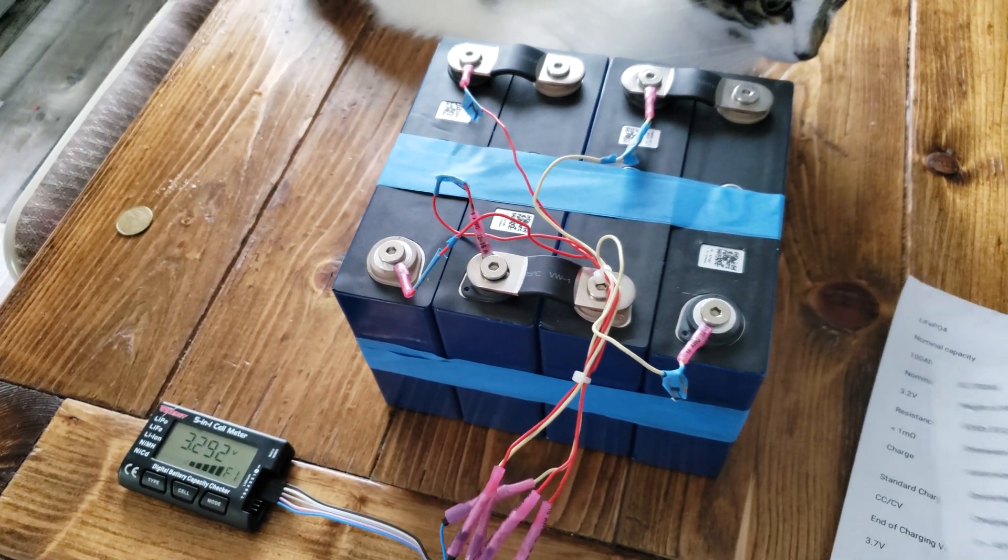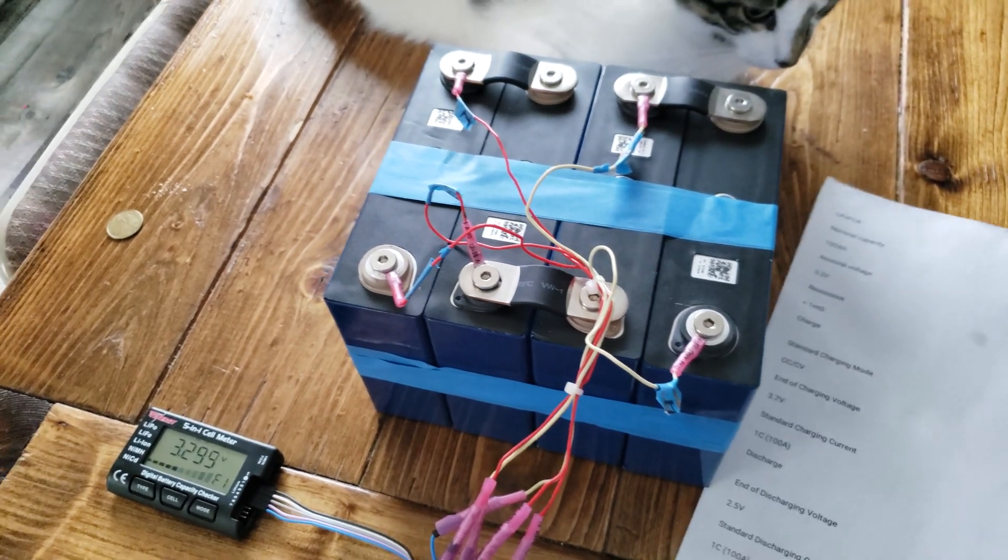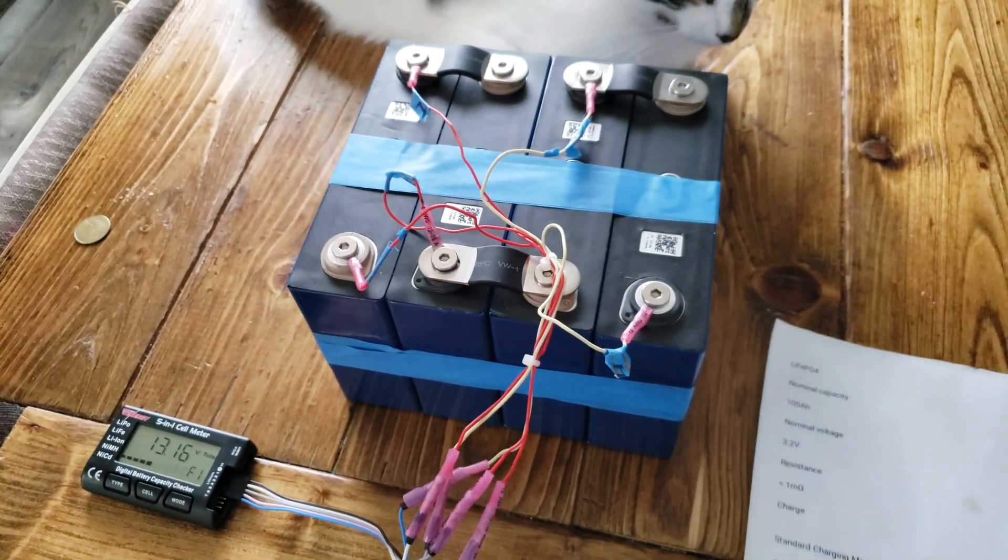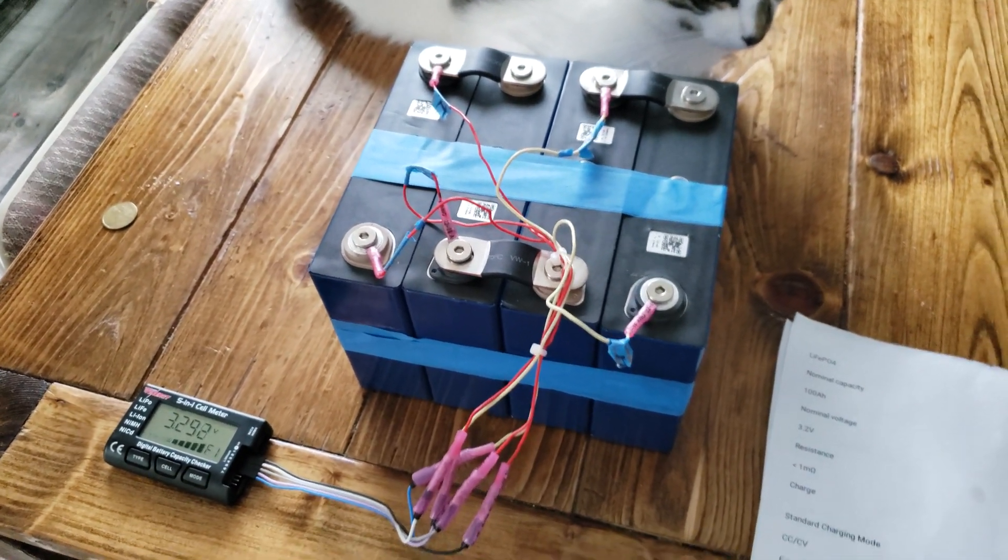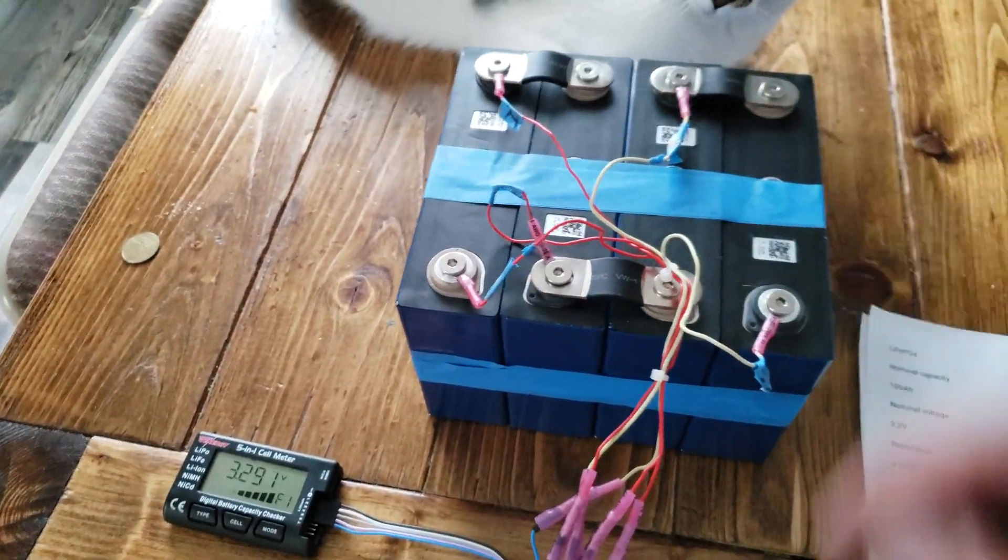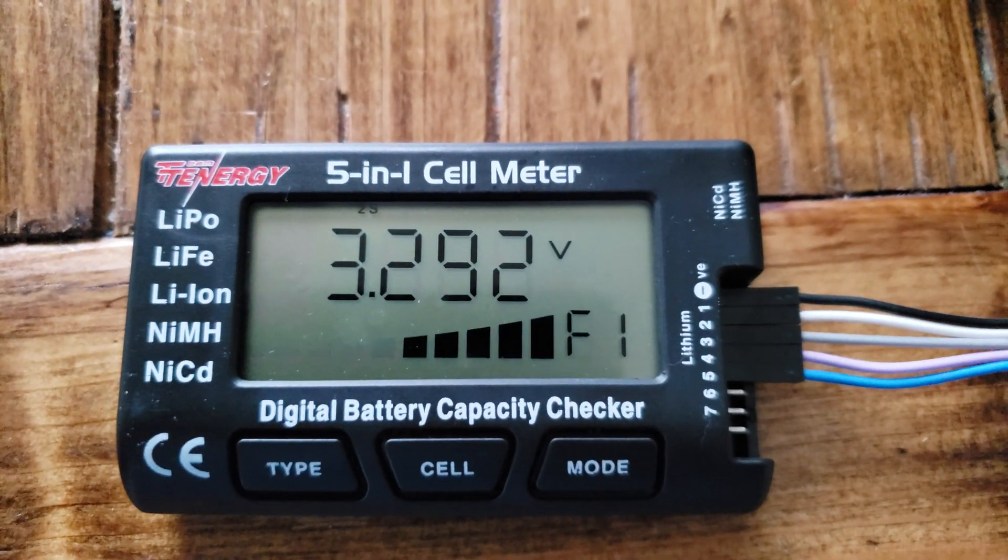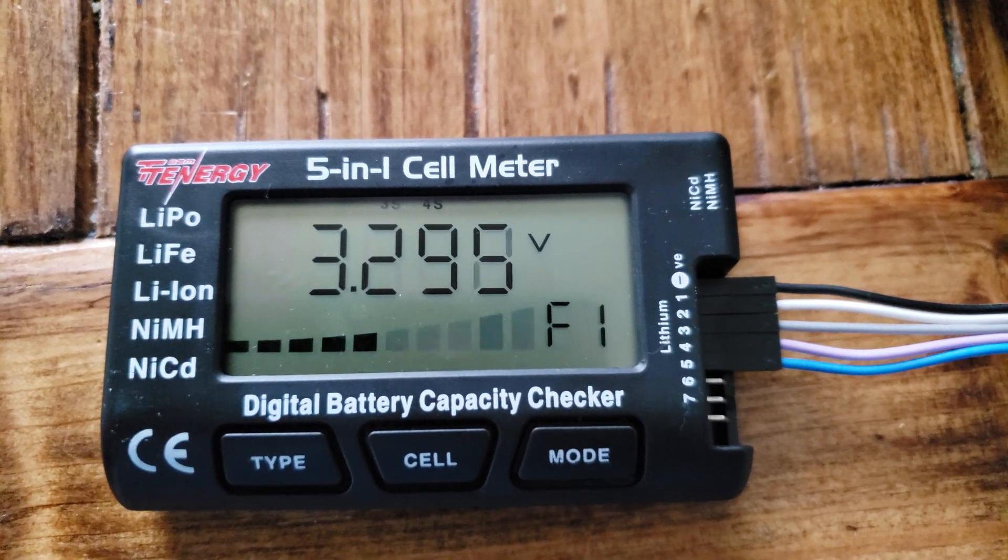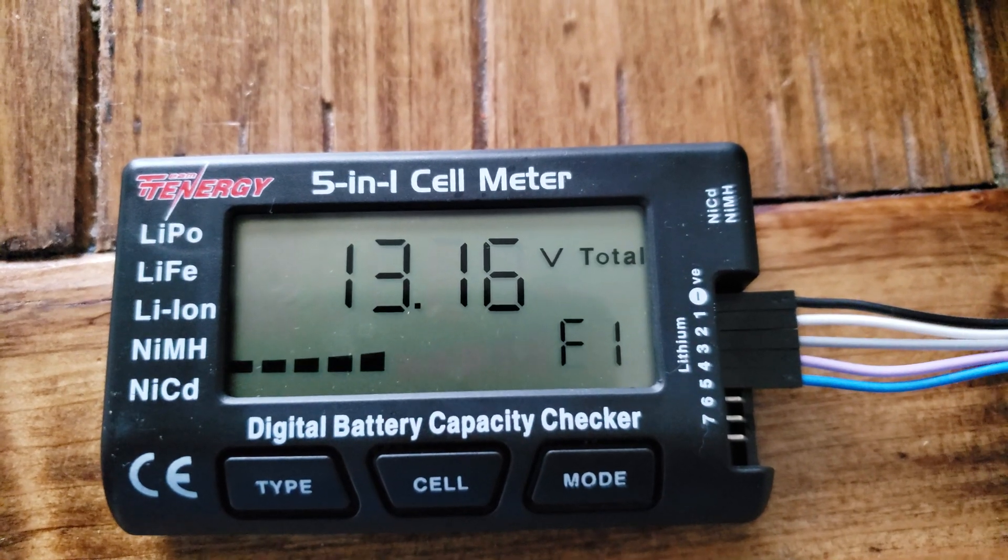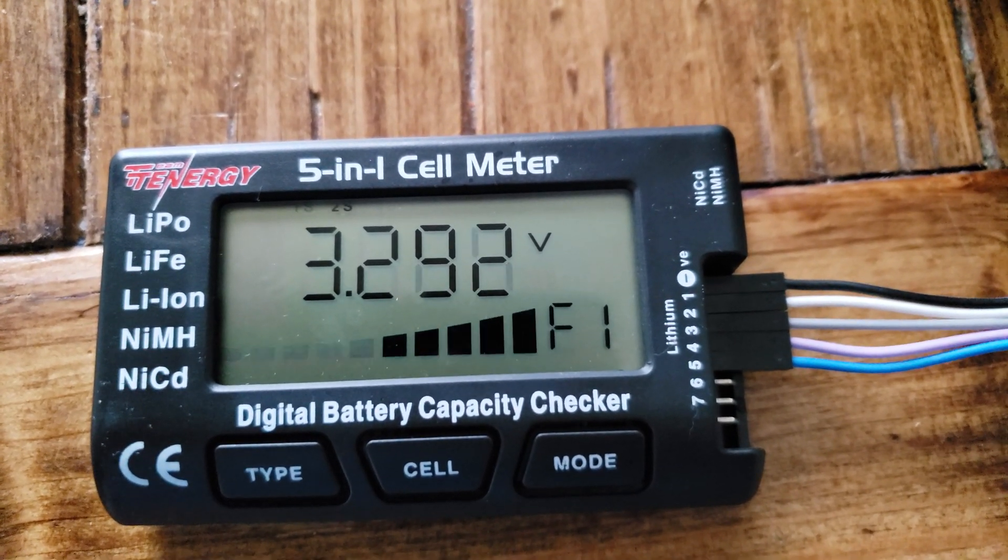I got some specs here so I'm going to show you some of the specs. It's 100 amp hour. The nominal voltage of each cell is 3.2 volts, so you can tell right here 3.2, 3.2, 3.2, 3.2. They're all at 3.2 right now.